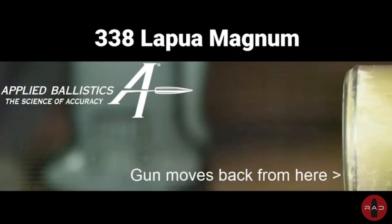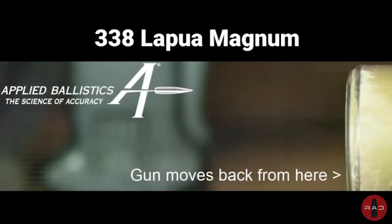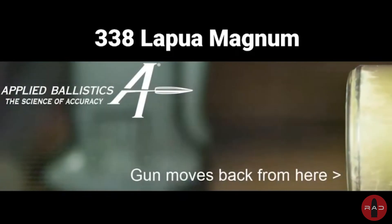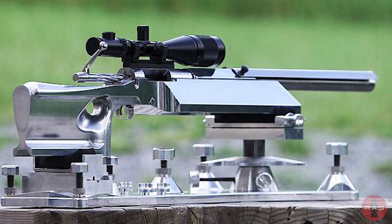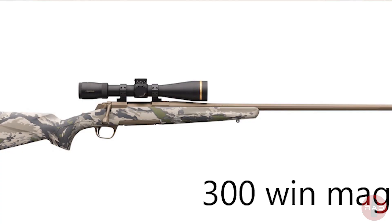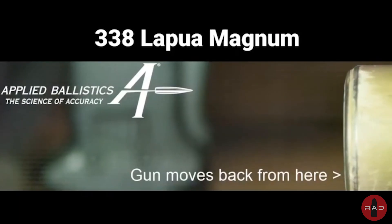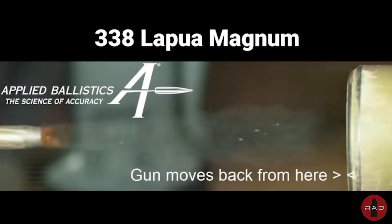Now, to keep this in mind: the rifle recoils first, then the projectile exits second. Consider a bench rest gun that weighs 30 pounds and shoots a super low recoiling round — this is inherently going to be a more precise shooting rifle in most shooters' hands than a rifle that weighs 4 pounds and shoots a super heavy recoiling round. This is because the rifle recoils first, and then the projectile exits second.